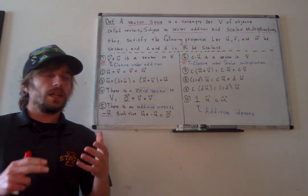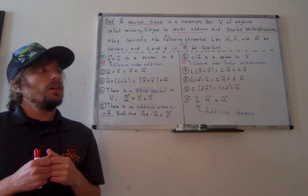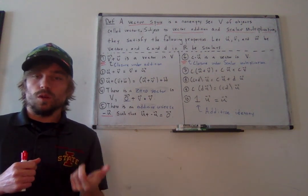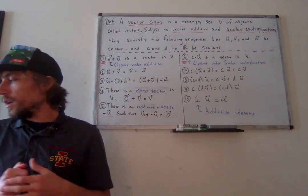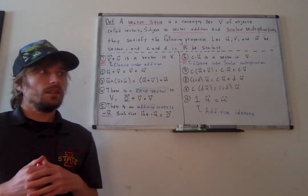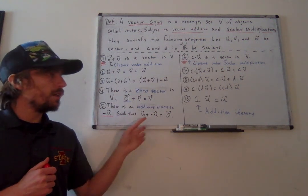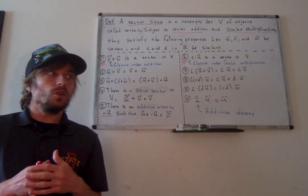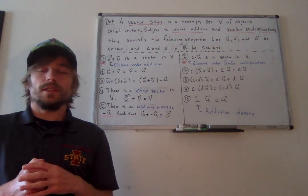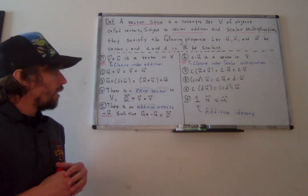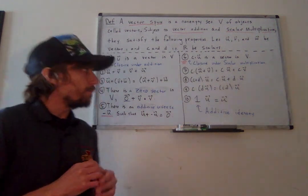Property five: there is an additive inverse — this should be true for every vector U. There is some vector such that when I add it to vector U, I get the zero vector. If I have the vector (1, 1, 1), its additive inverse would be (-1, -1, -1). The additive inverse of a vector is always that vector multiplied by negative 1 — we'll probably prove that later on.